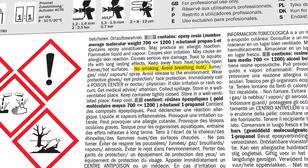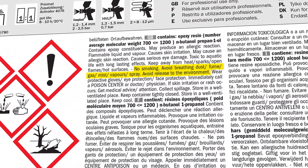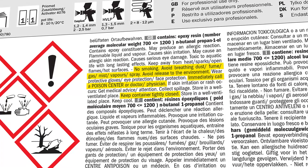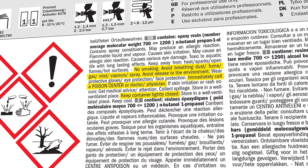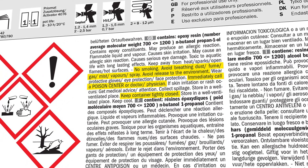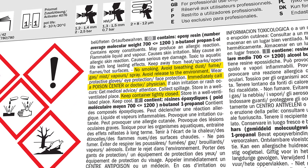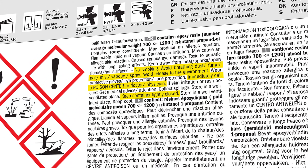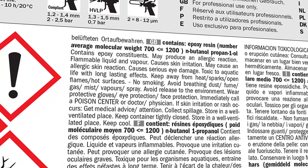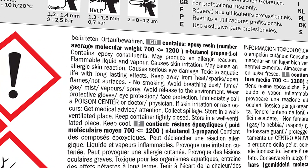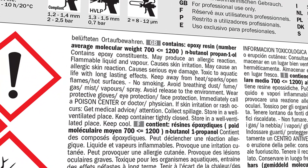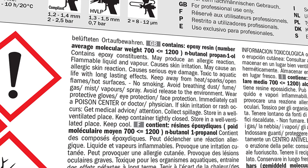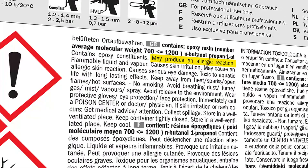The precautionary statement describes the recommended measures that should be taken to minimize or prevent adverse effects resulting from exposure to a hazardous chemical or improper storage, handling and disposal. The hazard statement describes the nature of the hazards of a chemical, including where appropriate the degree of hazard — for example, may produce an allergic reaction.